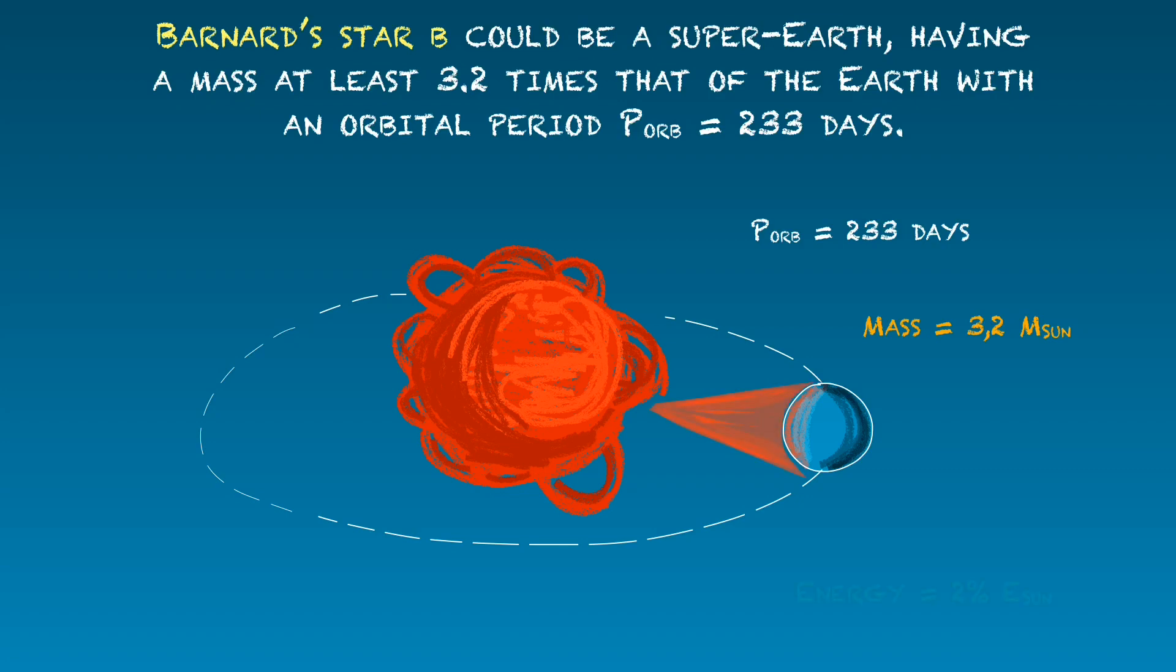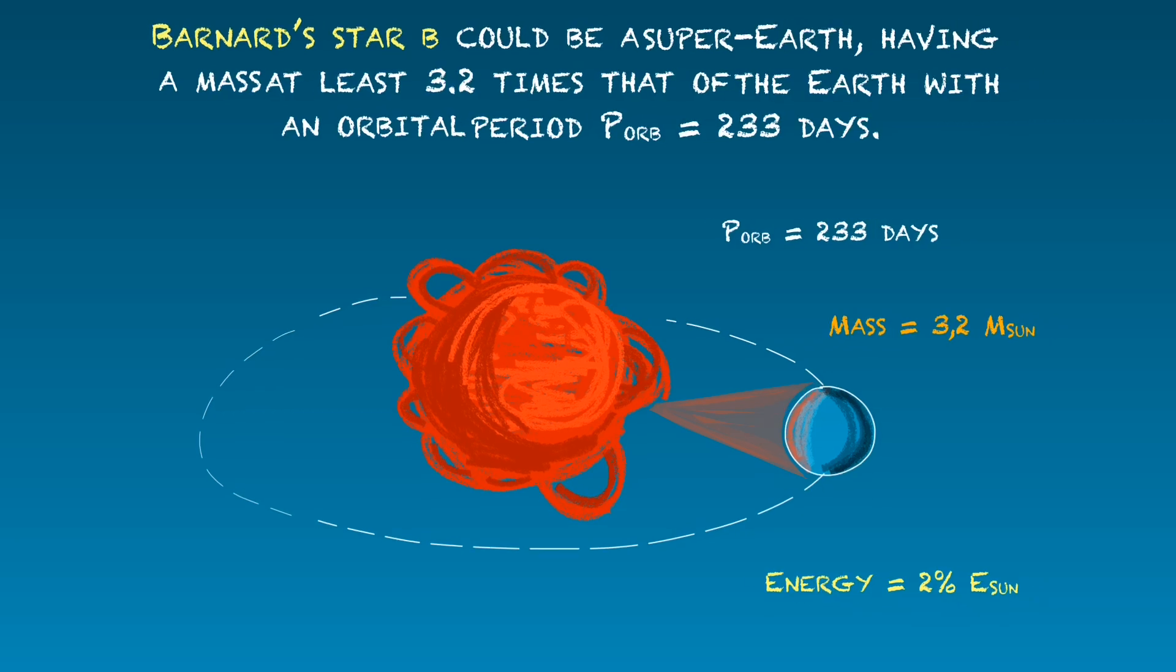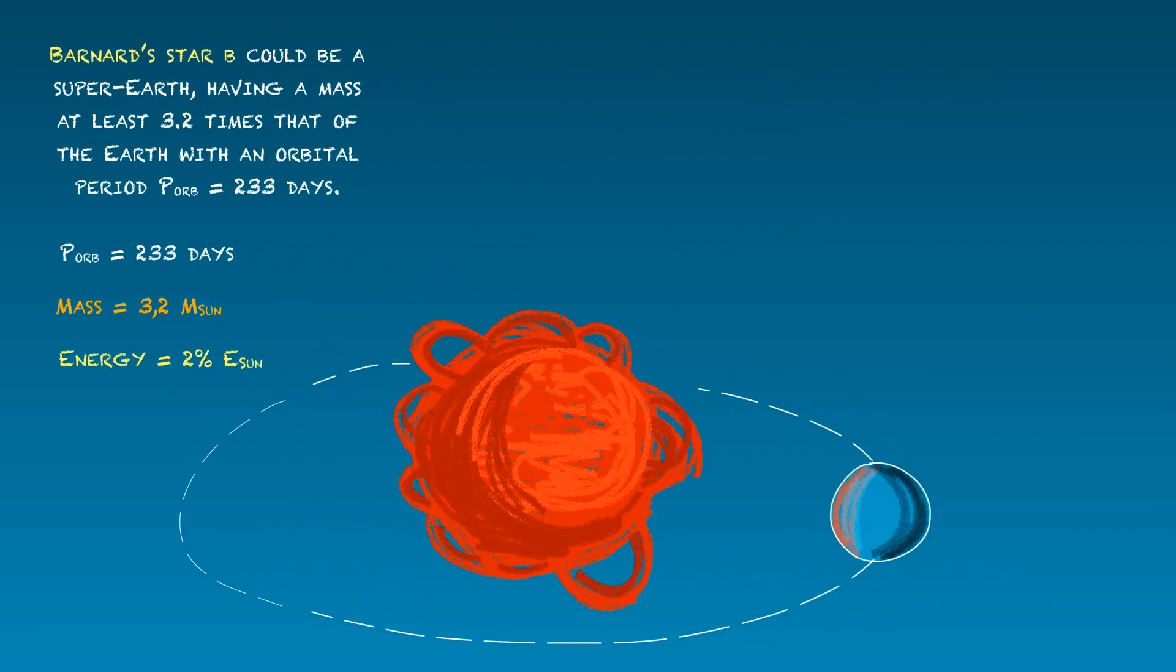Light from Barnard's star provides its planet with only 2% of the energy the Earth receives from the Sun. Despite being relatively close to its parent star, at a distance only 0.4 times that between Earth and the Sun,